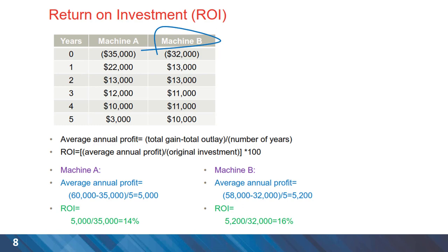When we divide this by the initial investment, ROI for Machine A is 14 percent. In the same fashion, Machine B has an ROI of 16 percent, and based on return on investment, Machine B becomes the alternative of choice.